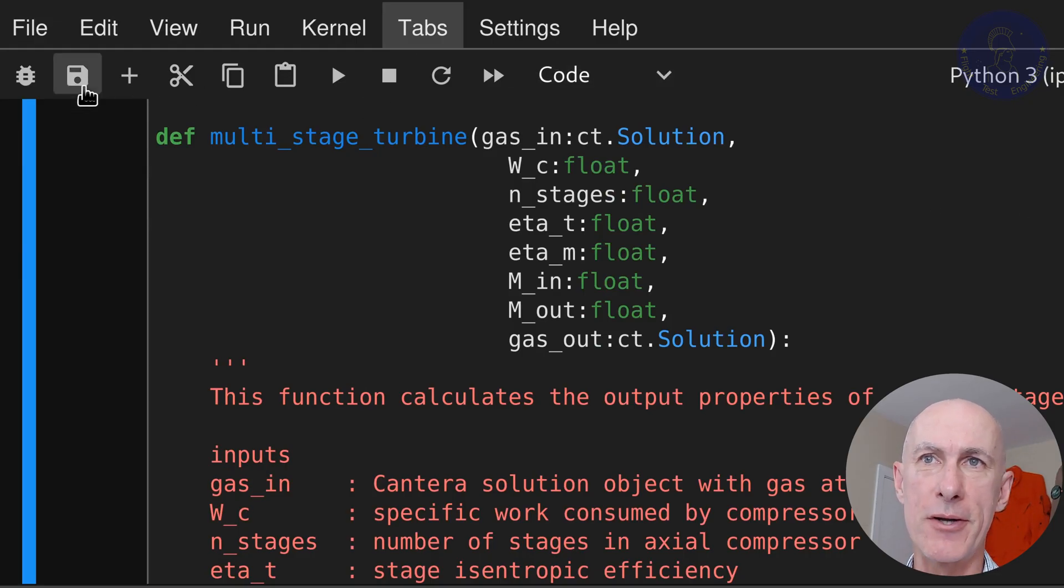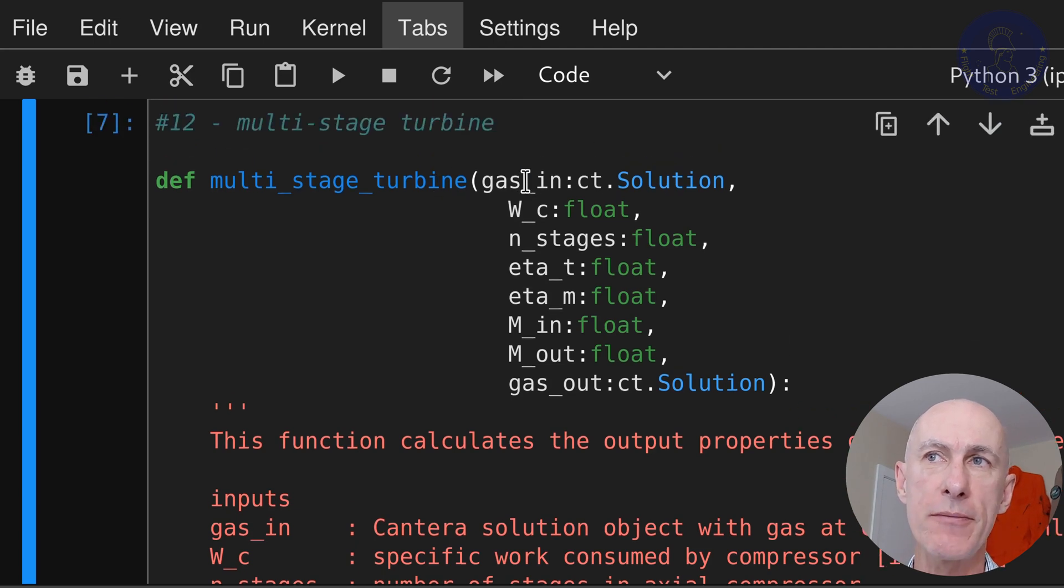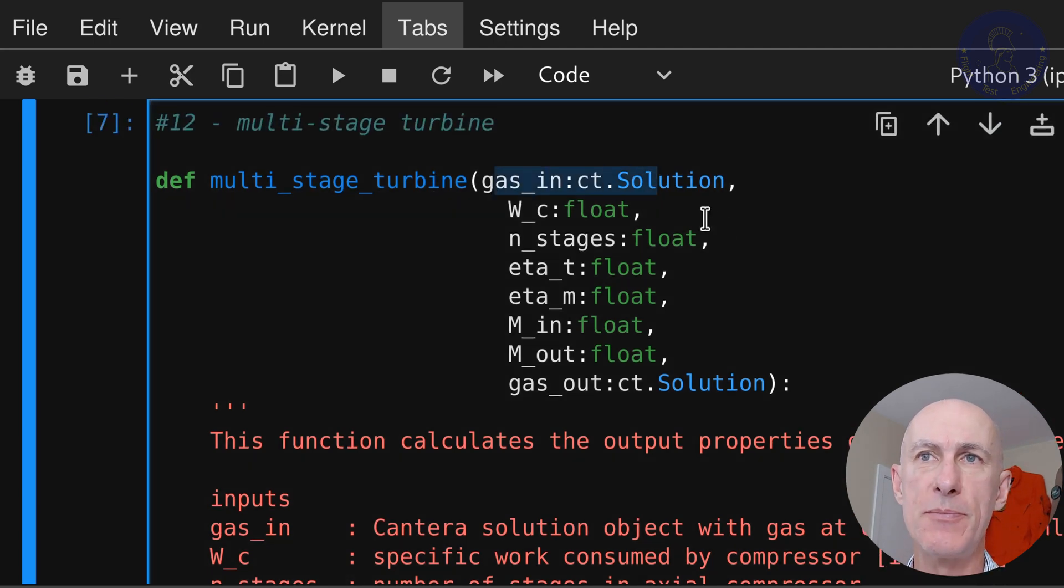We can now define our function. Like we had before, we are passing in the gas object for the gas coming out of the combustor, the specific work required by the compressor, the number of stages, eta T the turbine efficiency, eta M the mechanical efficiency or mechanical loss, the mach number in, mach number out, and we're passing back the updated gas object, just like what we did before. We're going to use this gas out object to essentially have all of the properties of the gas passed out of our function.